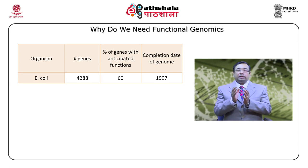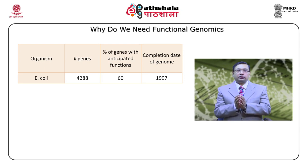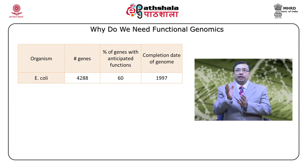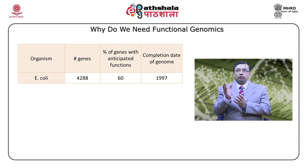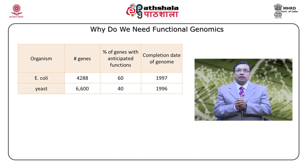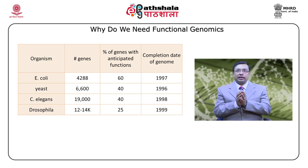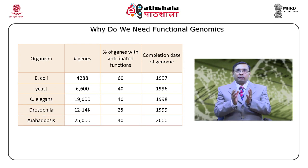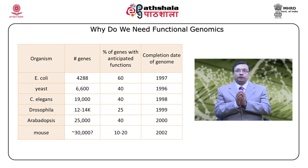The genome sequence is much easier to study as sequencing has already been accomplished in the following years: E. coli in 1997, yeast in 1996, C. elegans in 1998, Drosophila in 1999, Arabidopsis in 2000, mouse in 2002, and human in 2000.